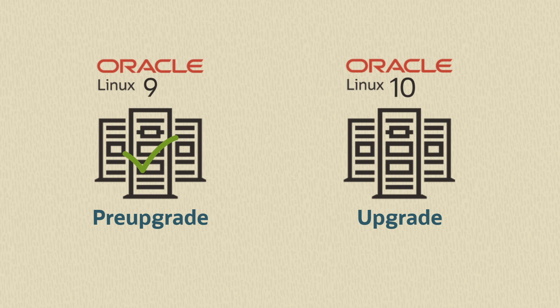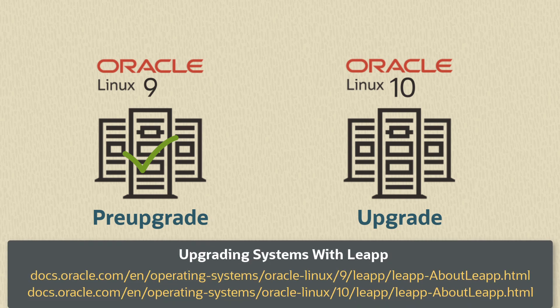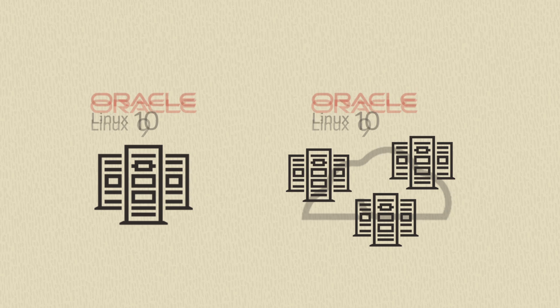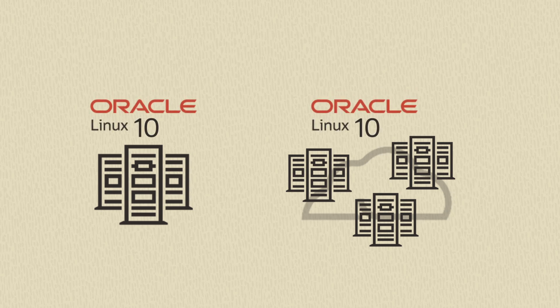It's important to always read about the supported systems, kernel prerequisites, and pre-upgrade checks in the Leap documentation for the specific Oracle Linux version you want to upgrade to. These links take you to the Leap documentation for upgrading to Oracle Linux 9 and 10. Leap can be used to upgrade Oracle Linux on-premise systems as well as Oracle Cloud Infrastructure instances.